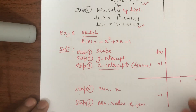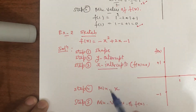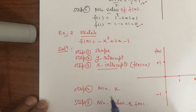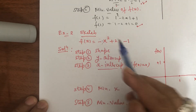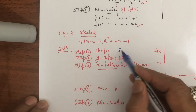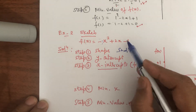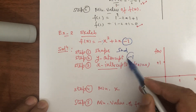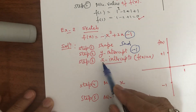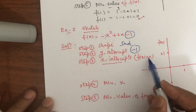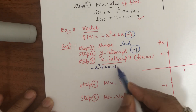Now the second example — I solved it before, now I will solve it with you. What should be the shape of this function? Because of this negative number with x², the shape should be sad. What is the y-intercept? This number is minus 1, so the y-intercept is minus 1. For x-intercepts, I should put f(x) equal to 0, so -x² + 2x - 1 = 0.